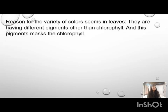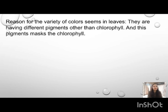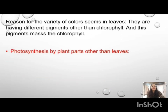Now we will see the reason for the variety of colors seen in leaves. We have seen not only green leaves but also yellow, red, and pink colored leaves. The reason is that these leaves still have chlorophyll, but the amount of chlorophyll is a little less compared to the colorful pigment. This colorful pigment masks the chlorophyll, and because of that the leaves appear colorful.